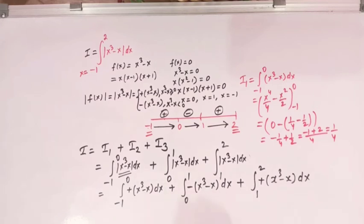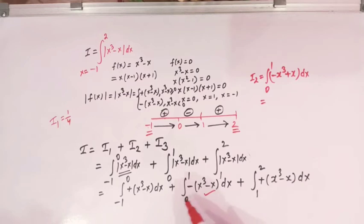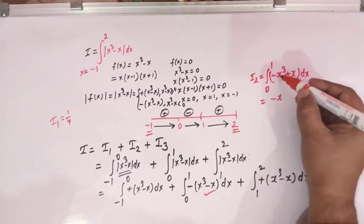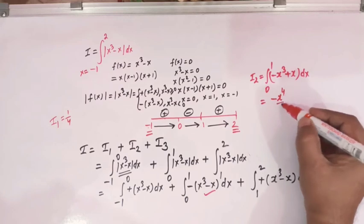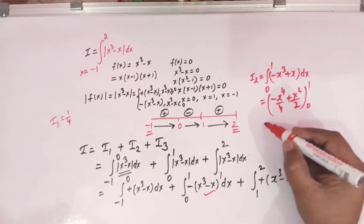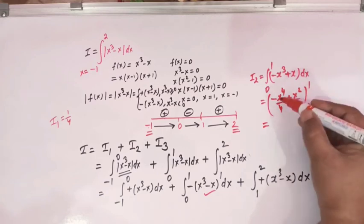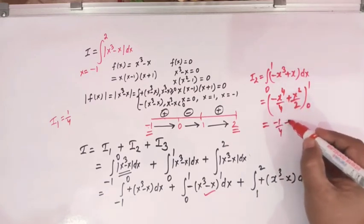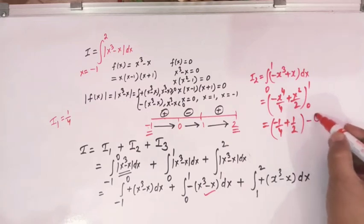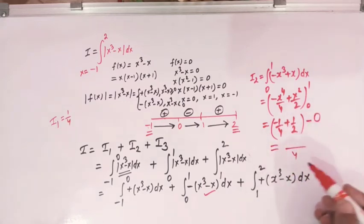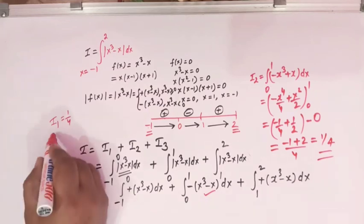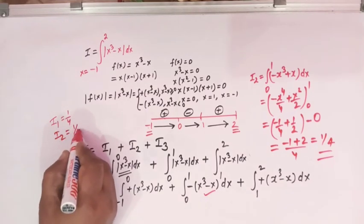Now I2 is the integral from 0 to 1 of minus(x cubed minus x) dx, which equals the integral of (minus x cubed plus x) dx. The antiderivative is minus x⁴ over 4 plus x² over 2, evaluated from 0 to 1. Taking x equal to 1 gives minus 1/4 plus 1/2, and at x equals 0 the term is 0. So I2 equals 1/4.